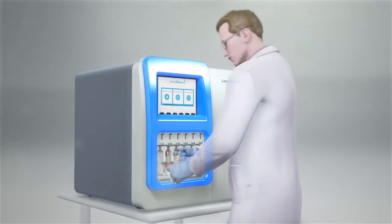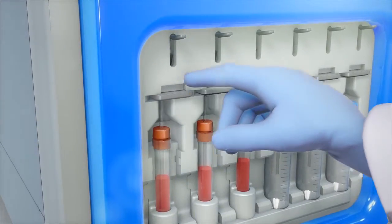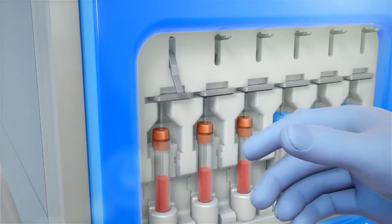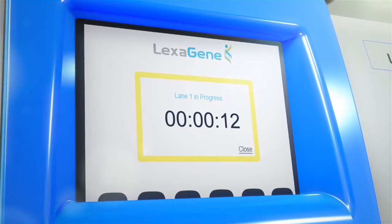LX6 is designed to be placed in facilities where personnel can load collected samples onto the instrument to be screened for up to 22 pathogens at once. Initiating sample processing takes less than one minute.